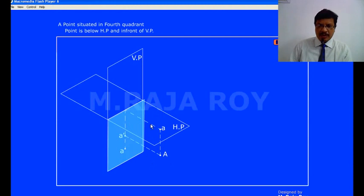So when 4th quadrant is closed, whatever top VP you are getting here, the top VP is overlapping with the front VP somewhere here.